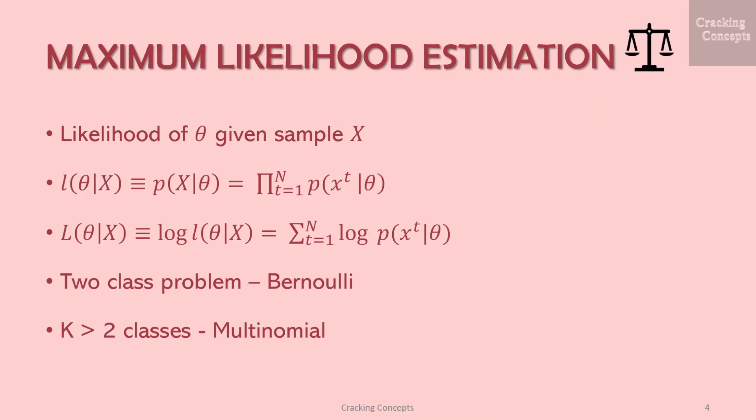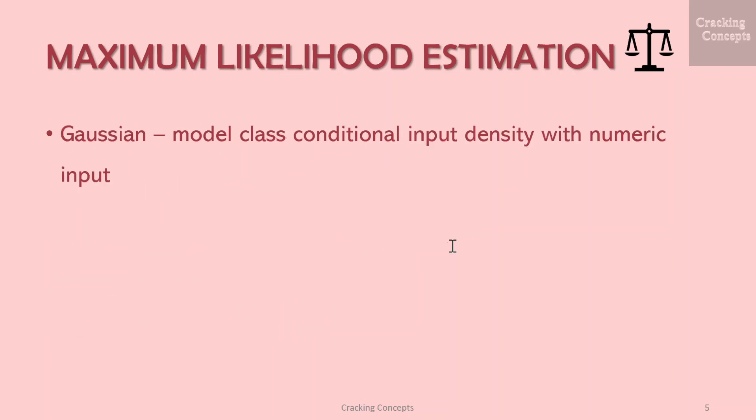The log likelihood is defined as L, which is the summation from t=1 to n of log P. If we have a two-class problem, the distribution we use is Bernoulli. When we have more than two classes, its generalization is multinomial. Gaussian or normal density is the one most frequently used for modeling class conditional input densities with numeric input.